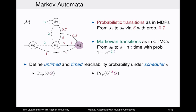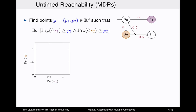The properties we consider in this talk are untimed reachability — the probability to reach a set of goal states — and timed reachability — the probability to reach a set of goal states within B time units. These probabilities are only defined once we resolve the non-determinism in the model via a scheduler or strategy sigma, which specifies which action to pick in each situation.